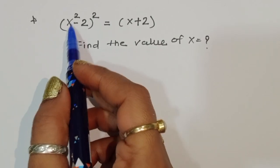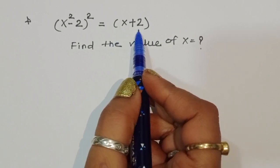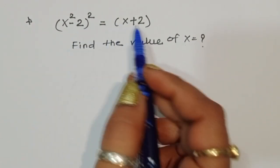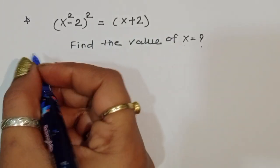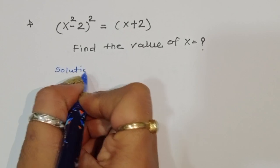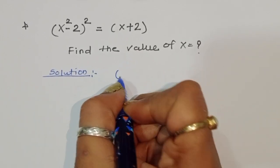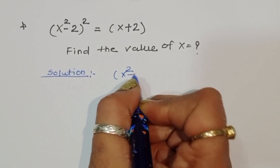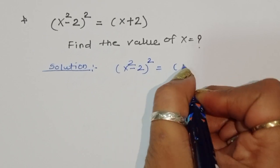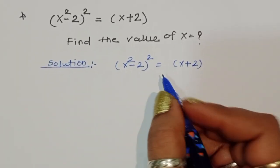The question is: (x² - 2)² = x + 2. We have to find out the value of x. Let's see the solution.